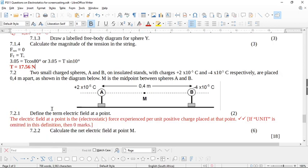Now it says to you, two small charge spheres, A and B on insulated stands, with charges plus 2 times 10 to the negative 5 and minus 4 times 10 to the negative 5, are placed 0.4 meters apart, as shown in the diagram below. M is the midpoint. So if this is the midpoint, we're going to split this 0.4 into 2. So this is going to be 0.2 and 0.2.